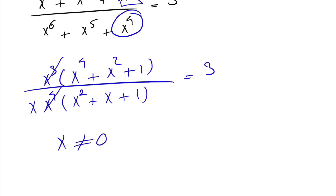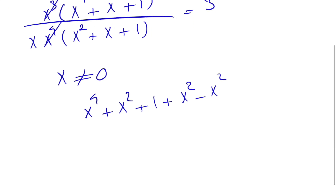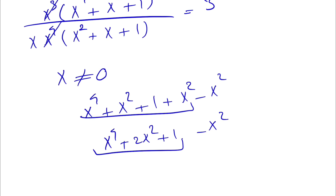Alright guys, hope you found a way around this equation. What we can do in the numerator — we have x to the 4 plus x squared plus 1 — is add another x squared and subtract x squared. So we get x to the 4 plus 2x squared plus 1 minus x squared.